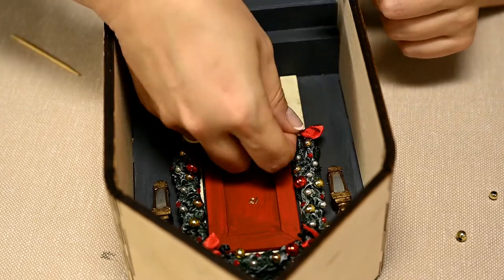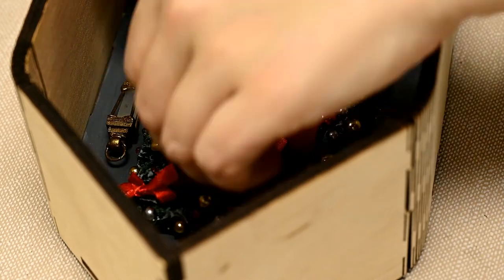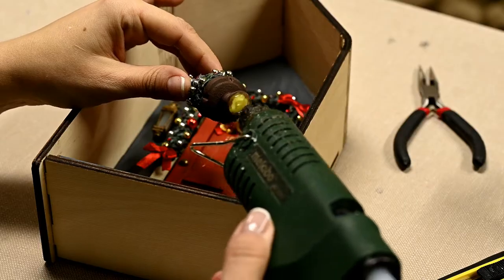I also found some tiny bells in my stock so I'm gluing these bells over the door. You can also make a wreath from cotton for the door if you like. And the last goes the tree.